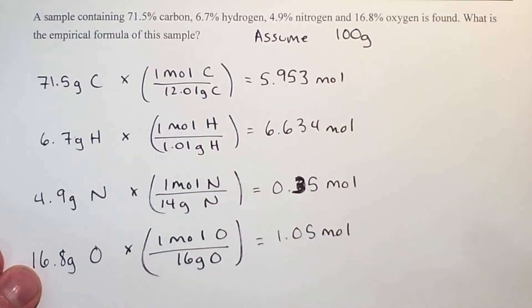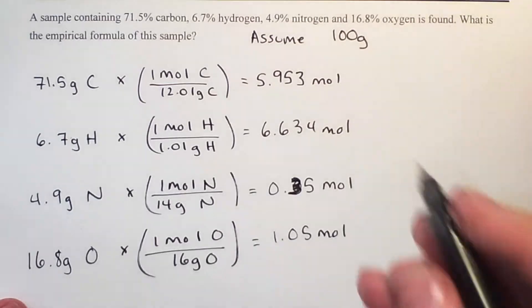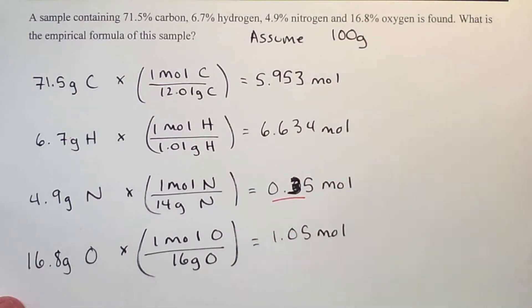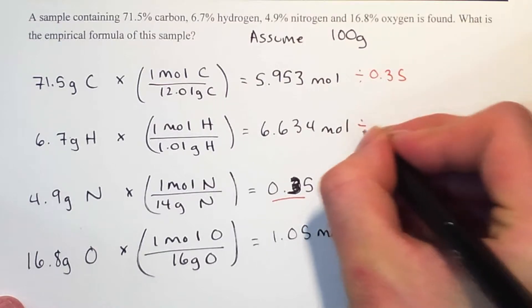One of these has to be present in the smallest amount. So what we do is we divide all of them by the smallest number, which is 0.35.